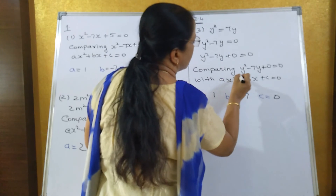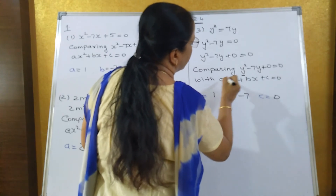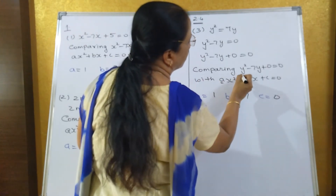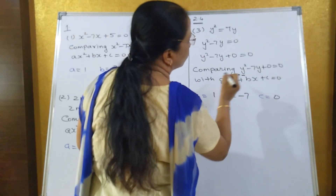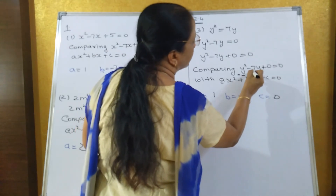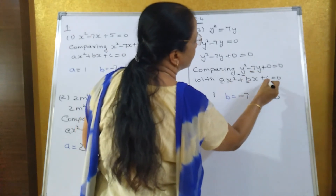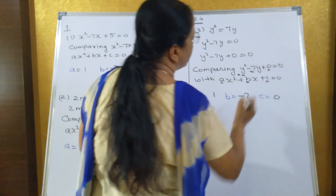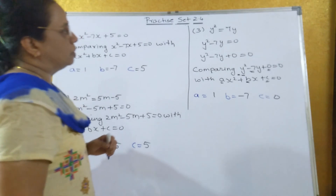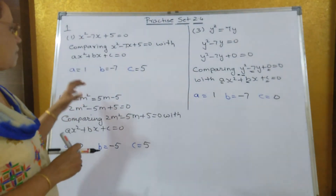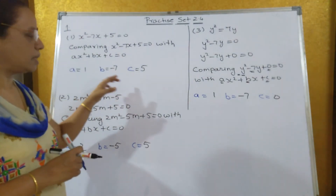So, this is compared: A is compared over here — there is no number, so A = 1. B is compared with minus 7, and C is compared with 0. So this is the way you have to find out the values of A, B, and C.